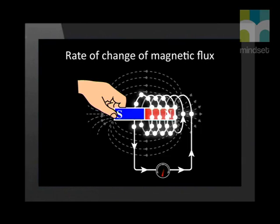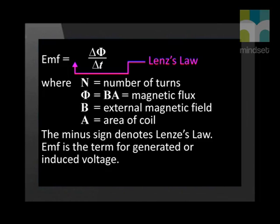Once we had covered magnetic flux, we were able to understand Faraday's law. This says that when a magnetic field moves relative to a conductor, an EMF is induced in the conductor. In other words, the induced EMF in the conductor is directly proportional to the rate of change of the magnetic flux. The magnitude of the induced EMF is given by Faraday's law of electromagnetic induction, and depends on the rate of change of the magnetic flux and the number of turns on the solenoid.